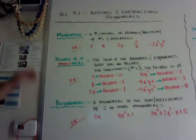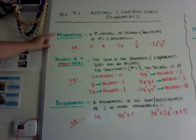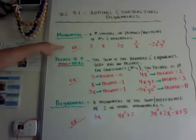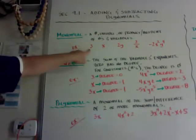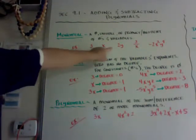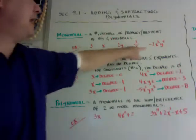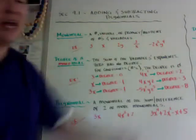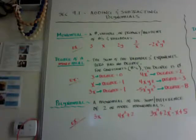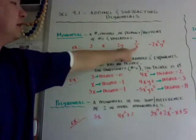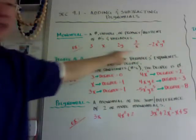Okay, so first, a monomial is a number, variable, or product or quotient of numbers and variables. So I got some examples. 2y is a monomial. Anything by itself that doesn't have plus or minus — so it's not a sum or a difference. If it's a product or a quotient, these are all monomials.